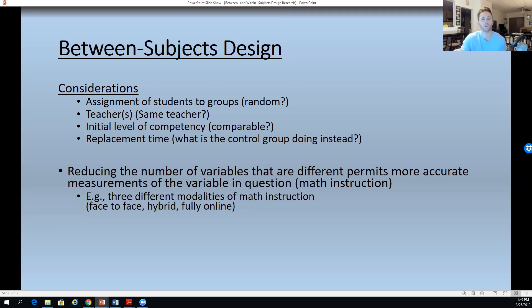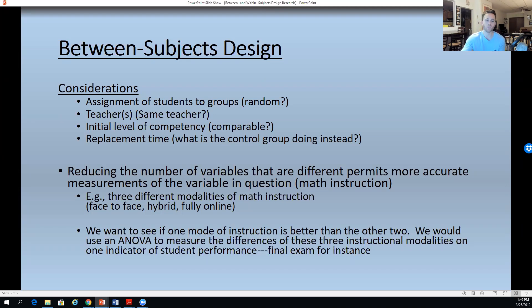As I said before, reducing those extra variables permits us to actually more accurately measure the difference in the variable of our interest. We want to see, for instance, for three different modalities of math instruction—face-to-face, hybrid, or fully online—which mode of instruction will lead to better outcomes or academic achievement. And so because it's three or more groups, we would use an analysis of variance.